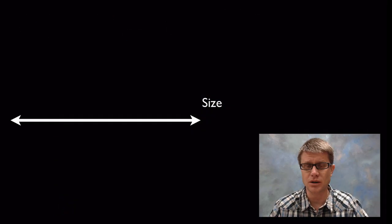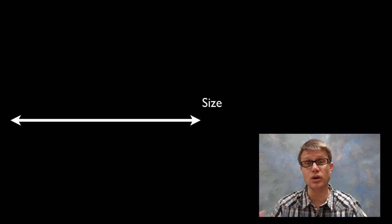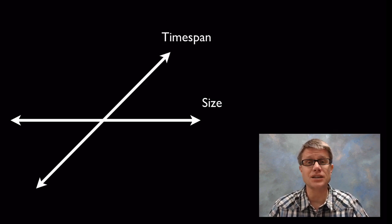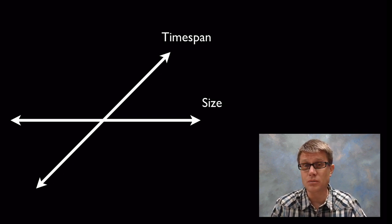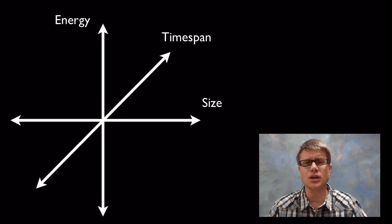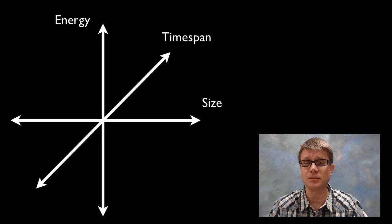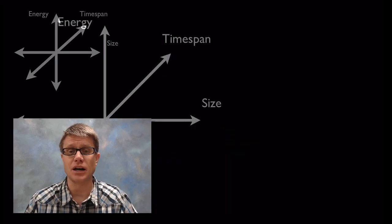Basically there are three continuums. We have the continuum of size. Things can be incredibly big or incredibly small. We've got this idea of timespan. It can be a really long period of time or an incredibly short period of time. And then we have huge amounts of energy or no amounts of energy. If we're talking about a proton, it's going to be incredibly small, have a really tiny amount of energy and it's going to operate on a really small time span. But something like continental drift is going to be massive in size, huge amounts of energy and it's going to take a long period of time for that to occur.